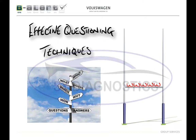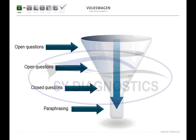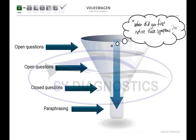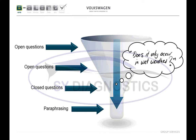Use open questions to find out about the environmental conditions in which the fault occurs — such as day, night, hot, cold, and things like that. It's important not to interrupt the customer when they're answering or try to finish their answers for them; just let them explain as much as they can. Collecting evidence can be compared to the collection of water — you start off with a broad open question such as 'when did you first notice these symptoms?' Once you've got those answers, use closed questions to gain facts. Closed questions require a yes or no answer, for example: 'Does it only occur in wet weather?'